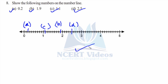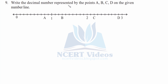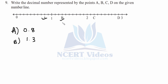Question 9: Write the decimal number represented by points A, B, C, D on the number line — the reverse of question 8. Point A is at the 8th division: 0.8. Point B is 1.3. Point C is 2.2 — that is 0.2 units apart from 2. Point D is 0.1 short of 3, so it is 2.9. That completes question 9.